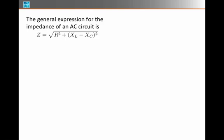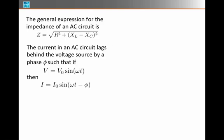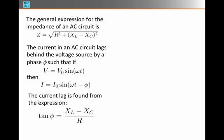So again, the general expression for Z is square root of R squared plus XL minus XC squared, and that's going to help us predict the current amplitude that comes out of a particular voltage amplitude, and it's also going to help us predict this phase delay of the current, where phase delay, remember, is calculated by tangent of phi is XL minus XC over R.